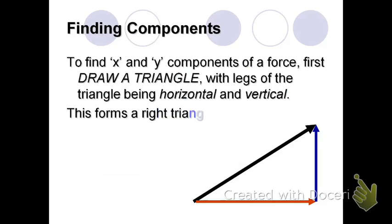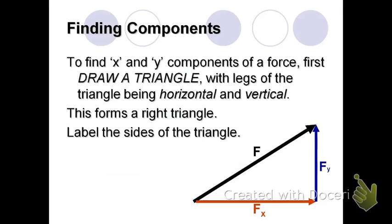So to find the x and y components of a force, first draw a triangle with the legs of the triangle being horizontal and vertical. This forms a right triangle. So we label those sides. F is the original force. The horizontal part we call Fx, the x component. The vertical part we call Fy, the y component.